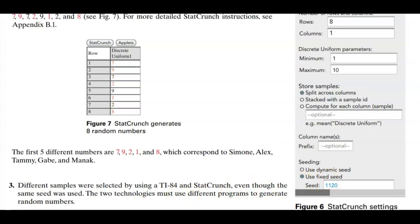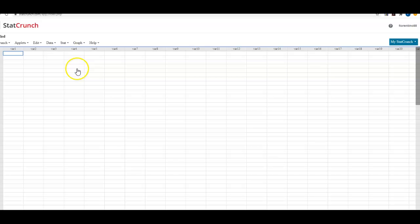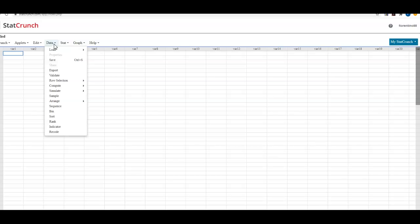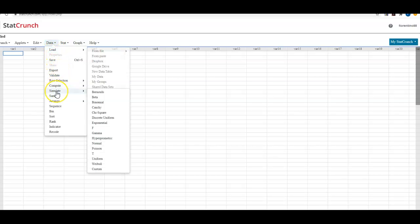If I'm using StatCrunch, I'm going to come up here and select Data, and then I'm going to scroll down all the way to where it says Simulate and then select Discrete Uniform.